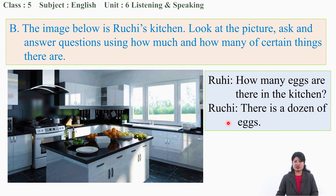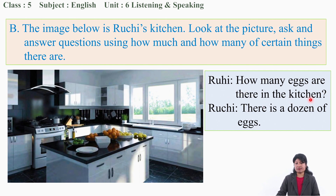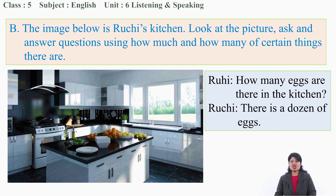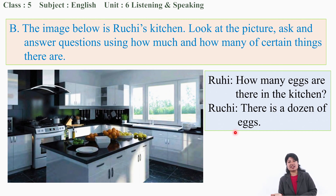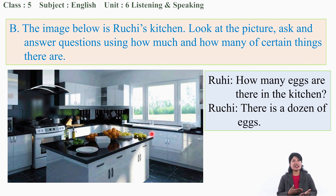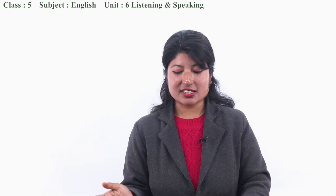For example, Ruhi asks Ruchi: 'How many eggs are there in the kitchen?' And Ruchi, being the owner, should answer: 'There is a dozen of eggs.' In this way, ask several questions and answer. You can create more dialogues. Get ready and practice with your partner.